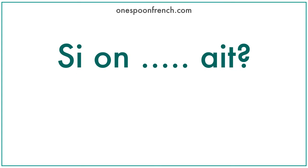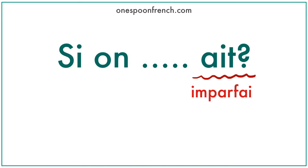Today we are going to learn how to say 'why don't we blah blah blah' using the pattern 'si on.' The verb which ends with '-ait' is the form of the imperfect tense which only exists in French grammar. But you only need to know the third person singular verb form in the imperfect tense to make this expression.